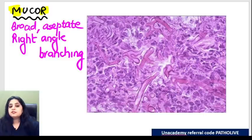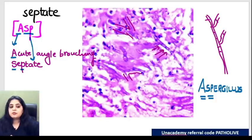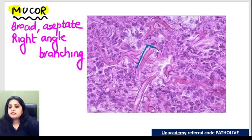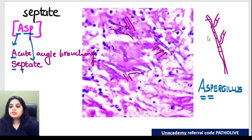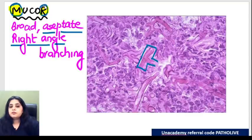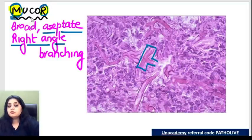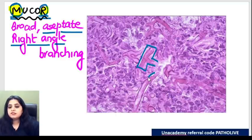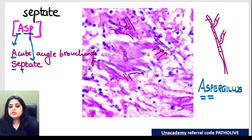Compare Aspergillus with Mucor - everything is opposite. If Aspergillus had acute angle branching, Mucor shows perpendicular right-angle branching. If Aspergillus was septate, Mucor is totally clean - it is aseptate. Further, M for Mucor, R for ribbon-like: Mucor is mota (broader) and ribbon-like. You can see the width - Mucor is quite thick, versus Aspergillus which is thin. Mucor is the broader, ribbon-like one.